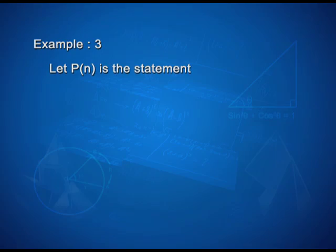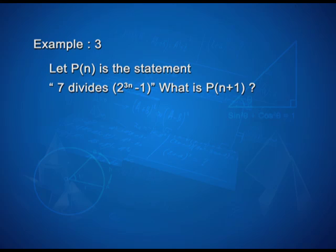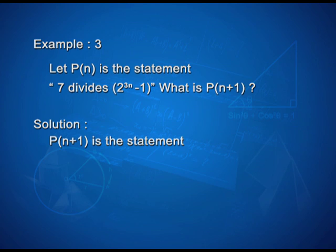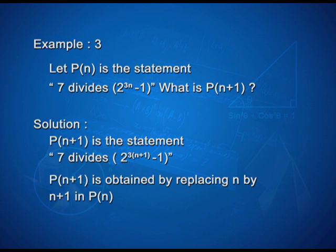Let us look into one more interesting example. Let p(n) be the statement: 7 divides 2^(3n)−1. What is p(n+1)? p(n+1) is the statement: 7 divides 2^(3(n+1))−1. Here p(n+1) is obtained by replacing n by n+1 in p(n).